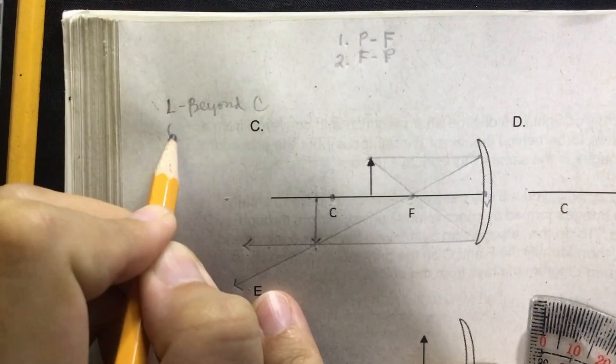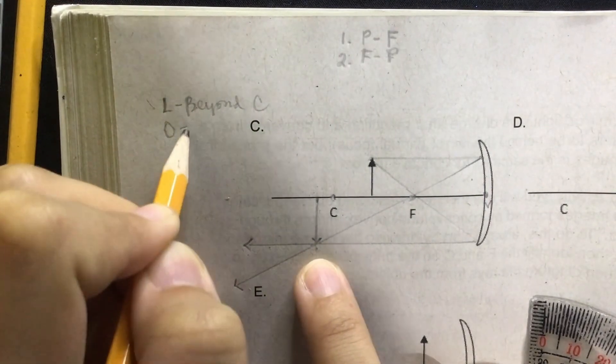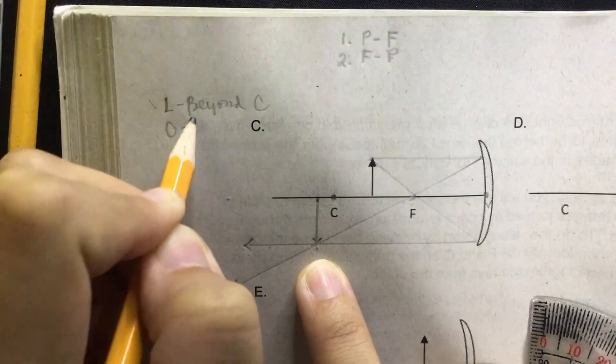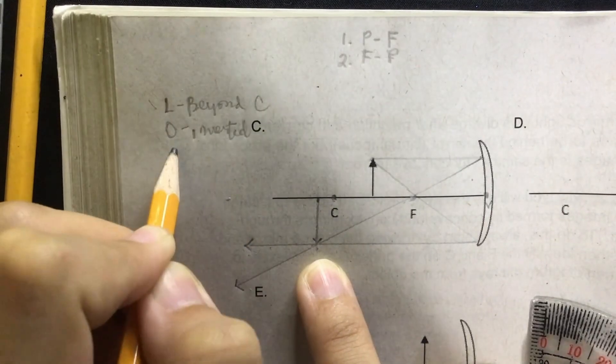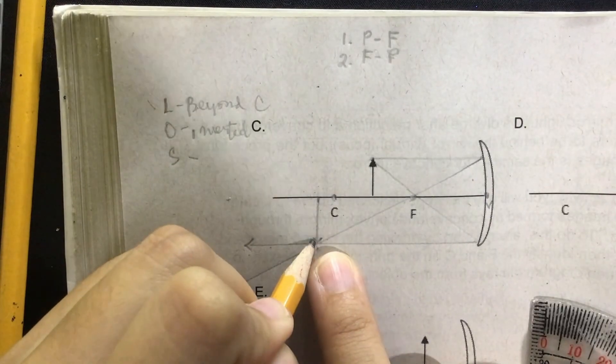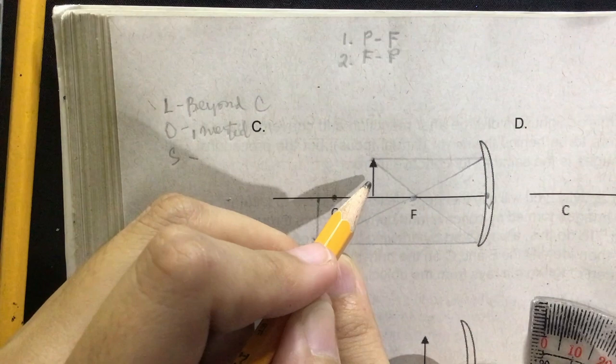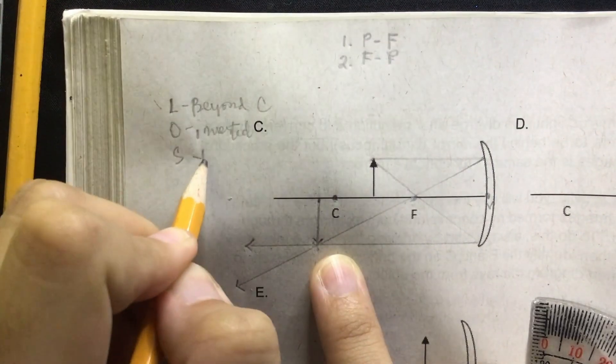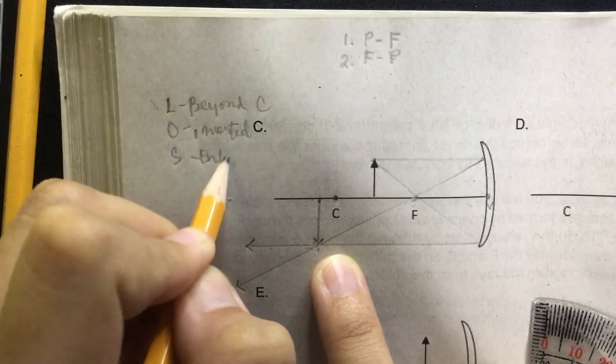Next is the orientation. It is upside down or inverted. Its size is bigger or larger compared to the object, so this time the image is enlarged or magnified.